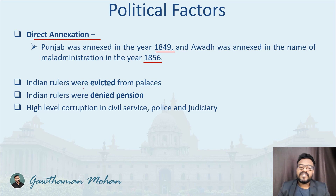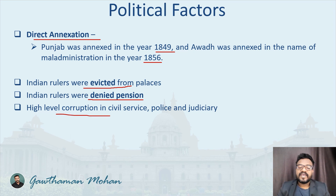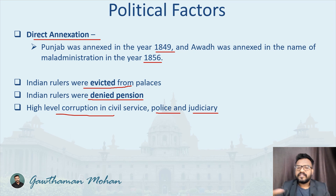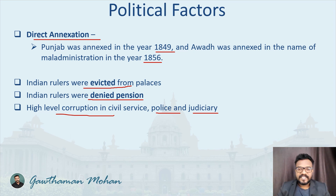Apart from that, rulers were evicted from their palaces and Indian rulers were denied pension. There was also a high level of corruption in civil service, police, and judiciary — the British administration had high levels of corruption across these departments. These are the important political factors that actually led to the revolt of 1857.